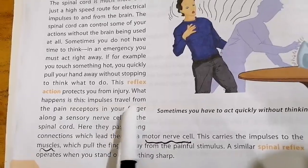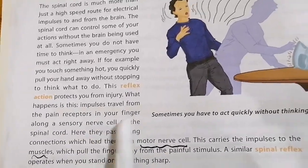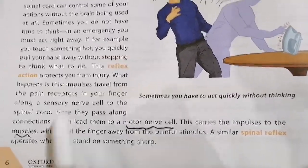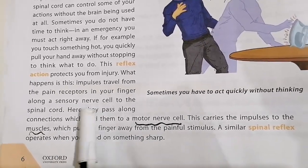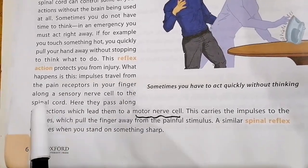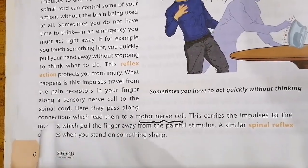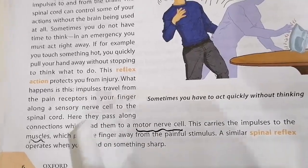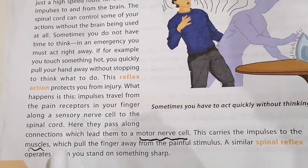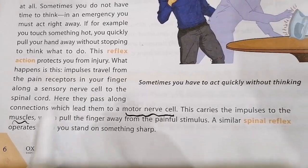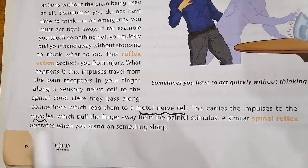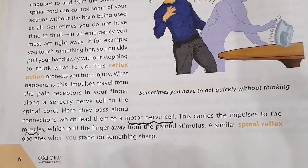What happens is: an impulse travels from the pain receptor in your finger along a sensory nerve cell back to the spinal cord. There, the impulse passes along connections which lead to the motor nerve. Rather than waiting for the brain to respond, the spinal cord carries the impulses directly to the muscles, which gives a direct connection with the muscles.